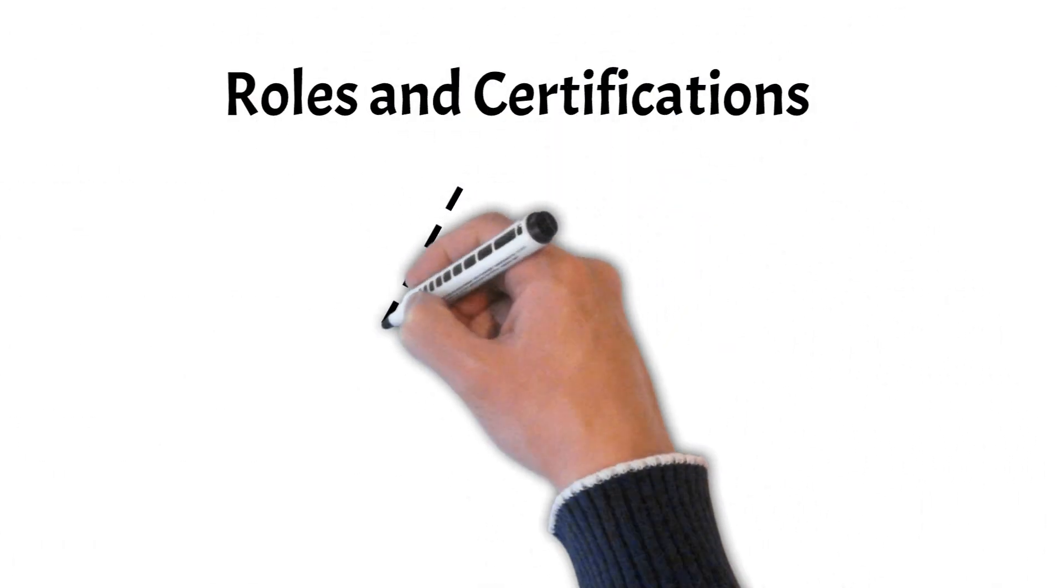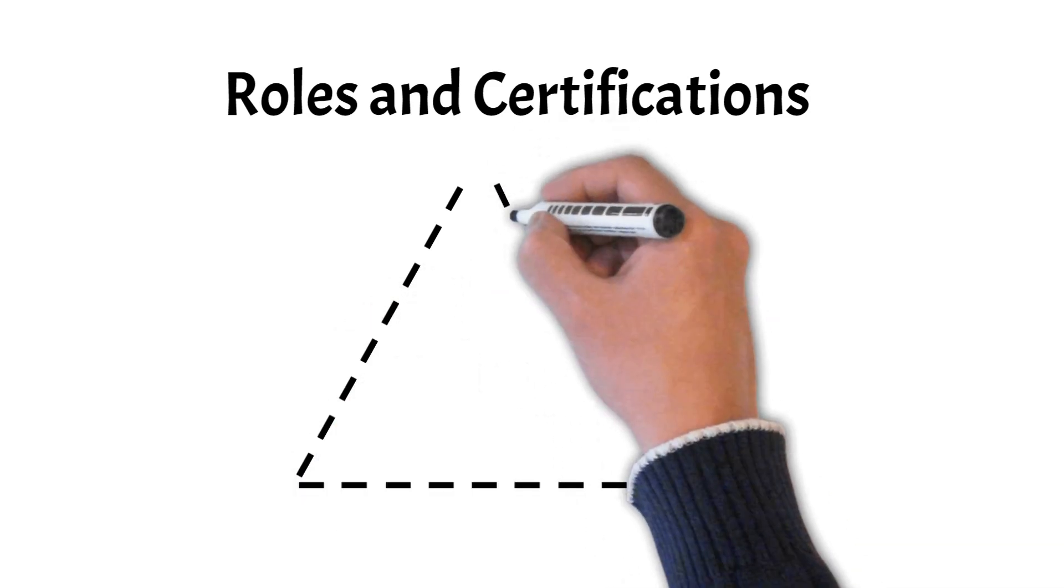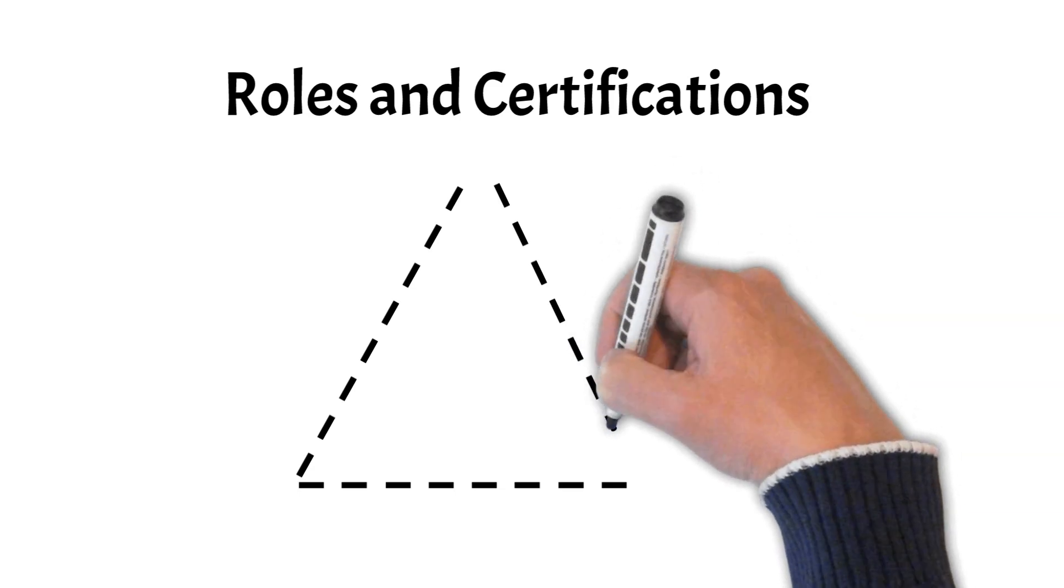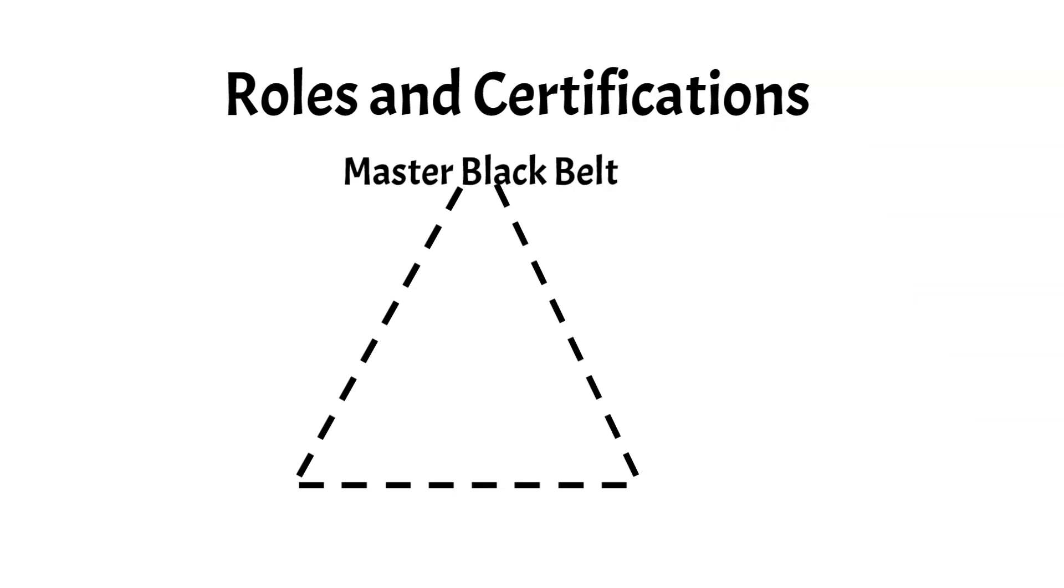In Six Sigma, we formally identify a hierarchy of roles and professional certificates that guide the way individuals engage in Six Sigma projects. Master Black Belts are experts who provide training and mentoring to Black Belts and Green Belts. Black Belts are full-time professionals who lead complex improvement projects. Green Belts are part-time project leaders who assist with data collection and analysis. Yellow Belts are team members who support projects and have basic Six Sigma training.